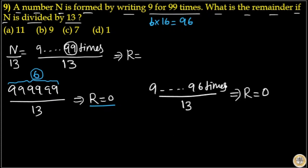So the remaining is 99 minus 96, that is 3 nines remaining. 999 divided by 13 will give you a remainder of 11, so option A is your answer.